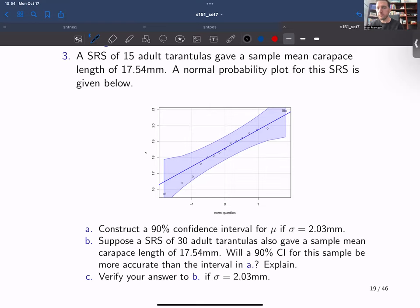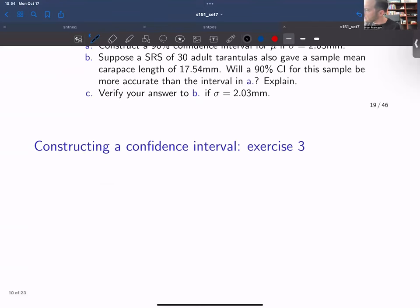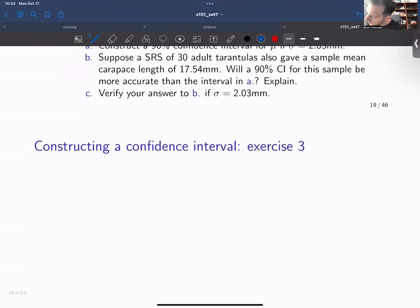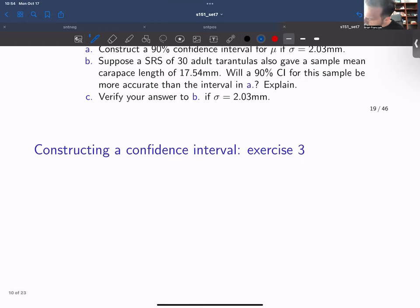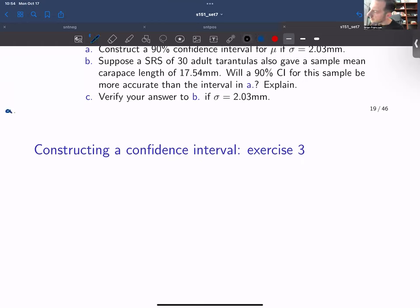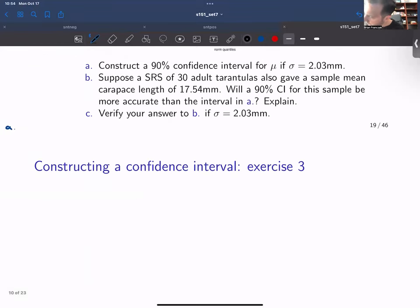Construct a 90% confidence interval for mu if sigma equals 2.03. So in this illustration, we have a change in Z-score. We have the following. So we are told the sample mean is 17.54.